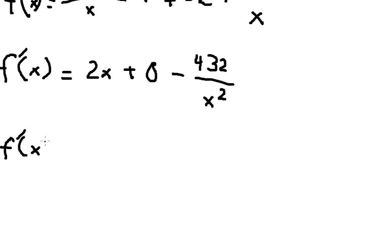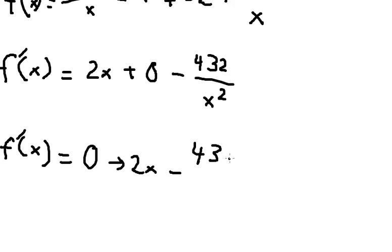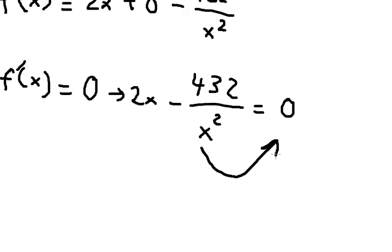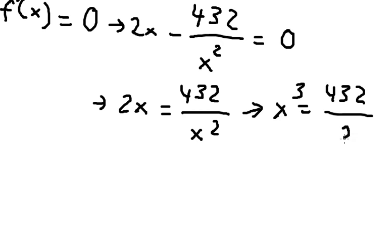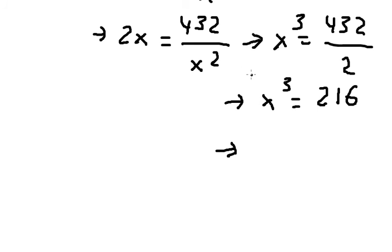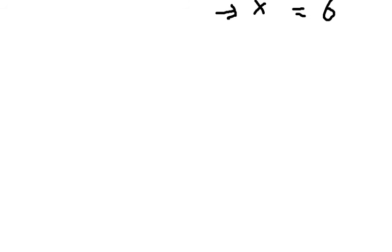Now I set this equal to zero: 2x minus 432 over x squared equals zero. Moving terms, we get 2x cubed equals 432, so x cubed equals 216. Taking the cube root of both sides gives x equals 6.